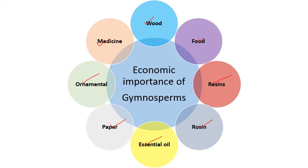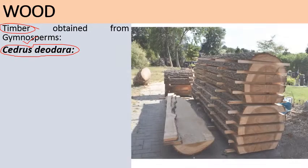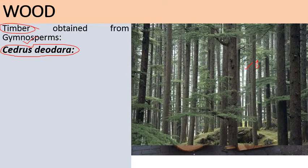Firstly, many gymnosperms are the source of superior quality wood used for making furniture, railway tracks, or buildings. We obtain this timber wood from gymnosperms. One classical example is Cedrus deodara, which produces superior quality Indian timber wood and is mostly found in temperate regions of India. This wood is scented due to the presence of certain essential oils and is resistant to insect, pest, and fungal attack.